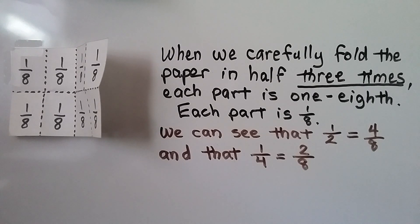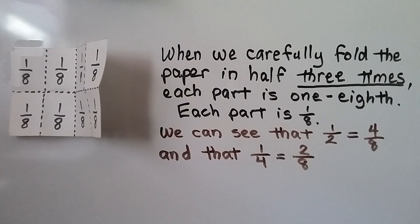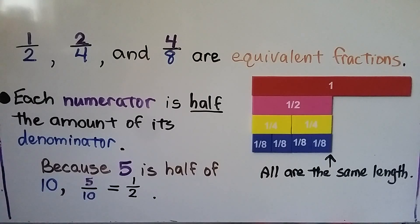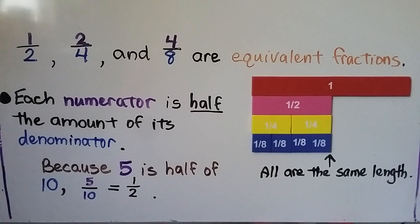You can try this on your own. You can take a sheet of paper, fold it in half one time, then fold it in half a second time, then fold it in half a third time, and you can make eighths. One half, two-fourths, and four-eighths are equivalent fractions.